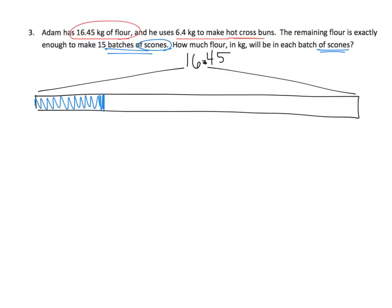So this huge tape diagram represents the 16.45 kilograms of flour. And we're going to begin by saying, well, let's just chop off this much right away. So this much is getting chopped off. And that's 6.4 kilograms, because that's for the hot cross buns. So that piece right there is for the hot cross buns.